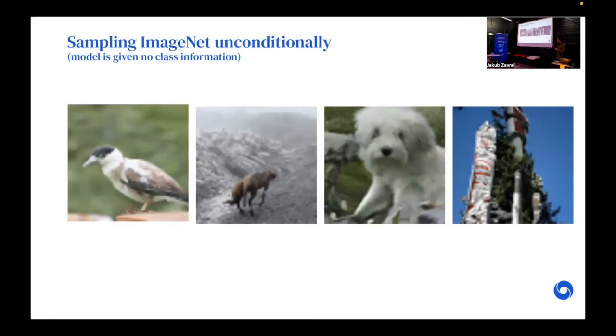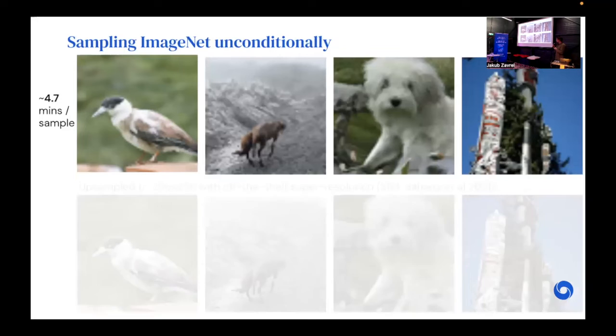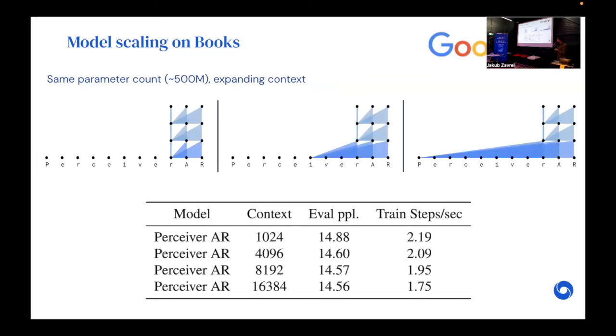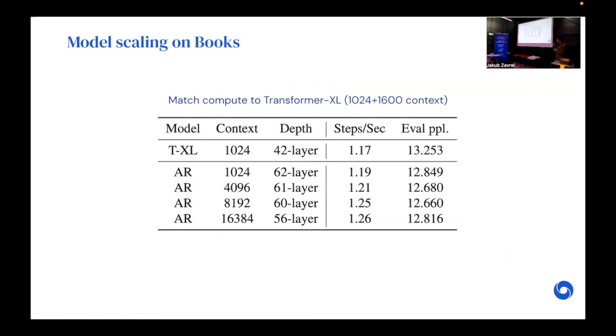We find the same model is able to sample from ImageNet unconditionally. With some optimization, we're able to get image sampling down to reasonably tractable speeds. We find that the model, by expanding the context, so on the Books dataset, which is an internal Google long context dataset, we find that with the same parameter count, by increasing the context by a factor of about 16, we can still get just a mild reduction in the train steps per second while getting consistently improving results. If we compare match compute to Transformer-XL, we find that basically at a matched steps per second rate, we get consistently better results, which suggests that this is a good way to incorporate longer context without an increase in compute requirements.